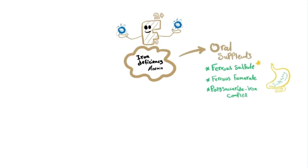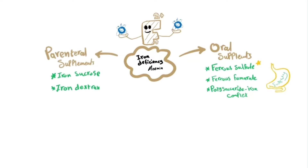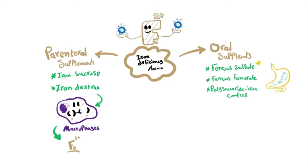Usually we can give supplements. Those can be oral, including ferrous sulfate, ferrous fumarate, and polysaccharide iron complexes. Those differ in cost and taste — ferrous sulfate is the most used, but it has a metallic taste, so the polysaccharide iron complex was made, which does not have that taste. We can also give parenteral supplements, which are simply iron bound to sugars like sucrose or dextran. When injected, the iron dextran is consumed by macrophages, dextran is cleaved from the iron, and the iron in ferric form is released. For sucrose, the iron goes directly to transferrin.